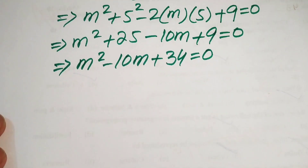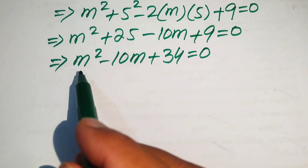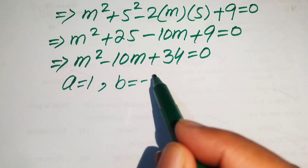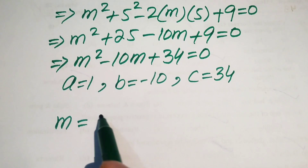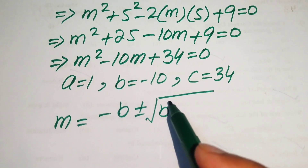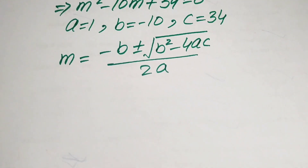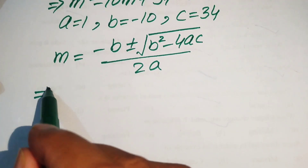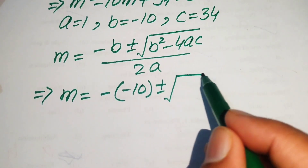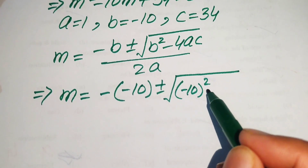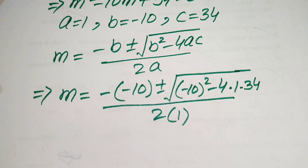We solve using the quadratic formula. The coefficients are a equals 1, b equals minus 10, and c equals 34. The formula gives m equals [minus b ± √(b² minus 4ac)] divided by 2a, so m equals [10 ± √(100 minus 136)] divided by 2.